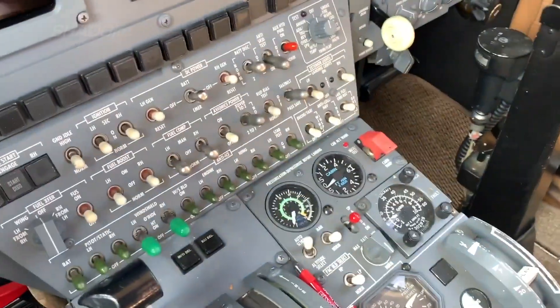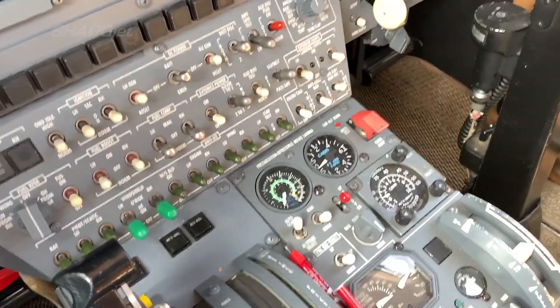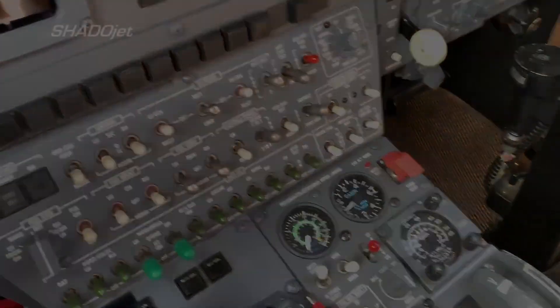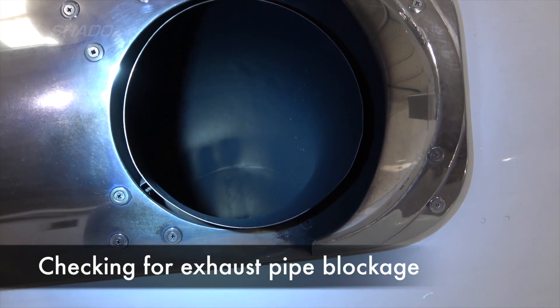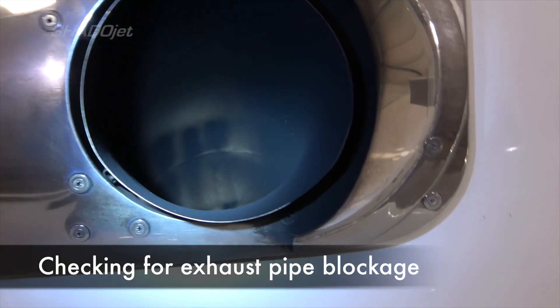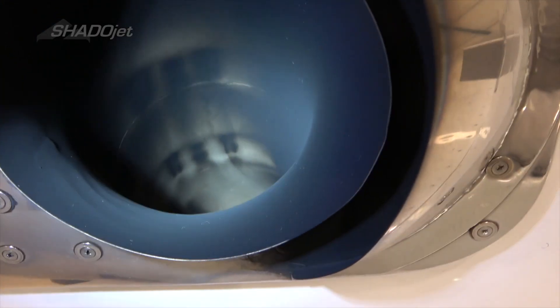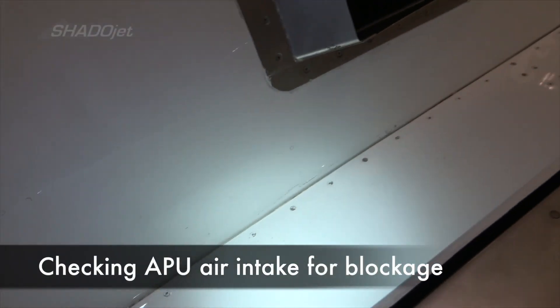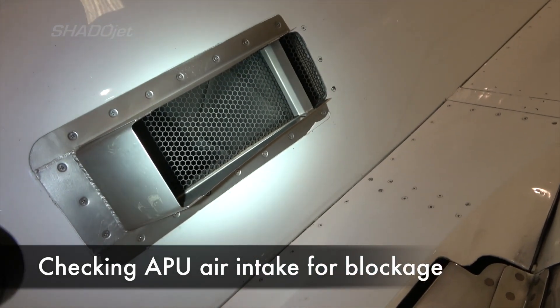Okay, recording. Gonna try an APU start. Pilots say that the APU does not start. We'll see what happens here in the cockpit. Here's the jet exhaust or the APU exhaust. It doesn't look like it's plugged up. And here's the APU intake. It's not plugged up by anything either.